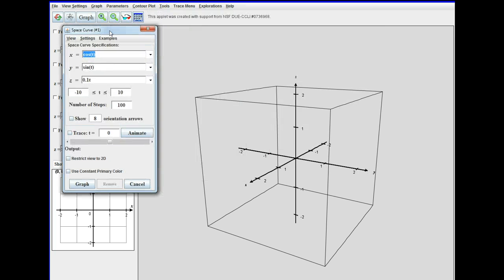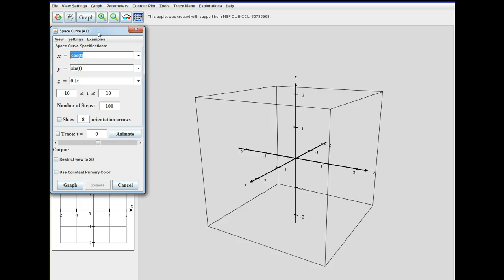So now I'm going to put in cosine t, two times sine t, and then t over two plus one. And put in the correct values of t, zero to two pi. The orientation arrows we don't need, the trace and animation we'll maybe show you in a second.